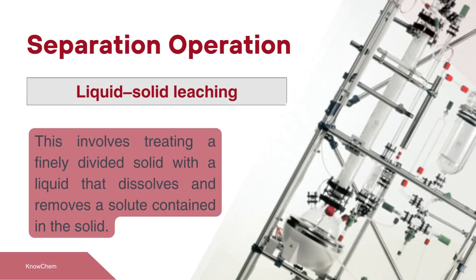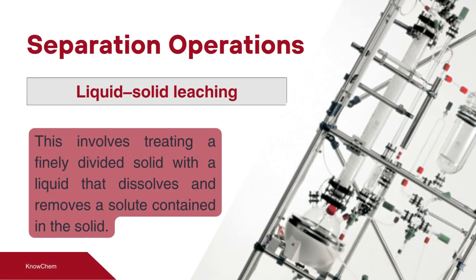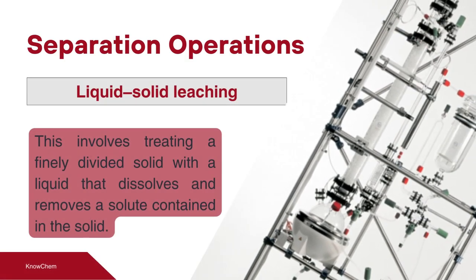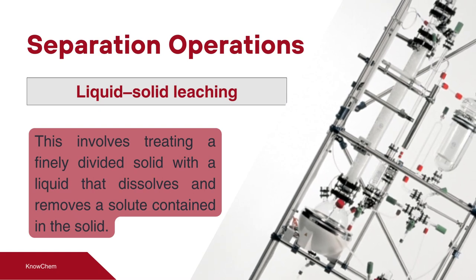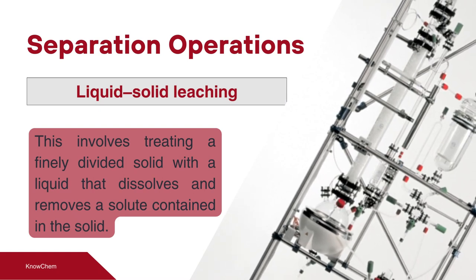Further ahead, we have an operation that involves solid and liquid phases, used for a special kind of extraction process, which is liquid-solid leaching. Leaching can also be known as solid extraction. The removal of a solute present in a solid is achieved with the assistance of a liquid capable of dissolving that solute. An example of leaching is the extraction of sugar from beetroot using hot water.